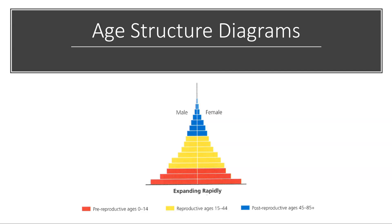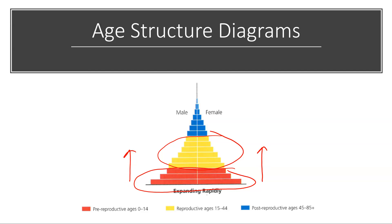The way to look at this is to compare the pre-reproductive age group to the current reproductive age group. That indicates relatively high fertility rates, in that the number of individuals in the pre-reproductive age is significantly higher than the number in the current reproductive age. What that also means is in the relatively near future, we are going to have a high number of individuals in that reproductive age group. If fertility rates remain higher, we're going to see rapid expansion of that population. The key characteristic of a rapidly expanding population curve is wide at the bottom, indicating that in the near future, we'll have a large number of individuals in that reproductive age group.